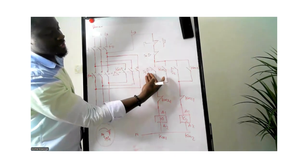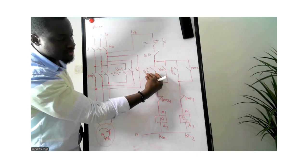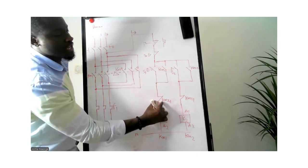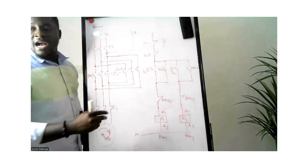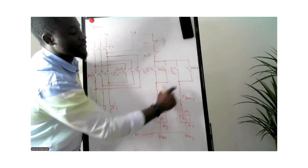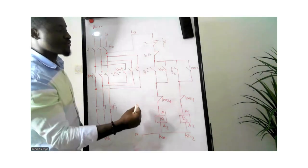The next is the stop push button which is represented as an open contact, S1. Then we have a close contact of KM2. As we keep going, I'll explain why we use the close contact of KM2 instead of KM1, or instead of contactor 1 or contactor 2.